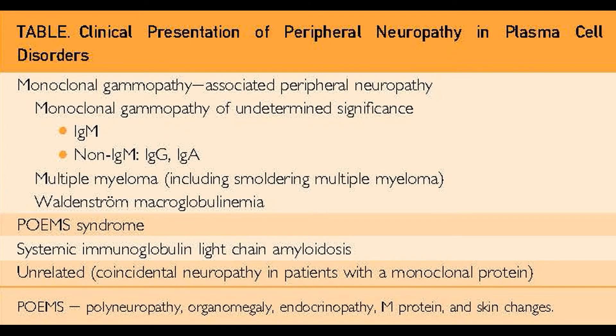Some of the major take-home points of this paper regard monoclonal gammopathy of undetermined significance and its association with neuropathy. We know that monoclonal gammopathies are quite common in the population and their incidence increases with age, as is also true of peripheral neuropathy. It's important to note that if a monoclonal protein is found, it is not always the cause of peripheral neuropathy — more often than not, it's a chance association and does not imply causality.